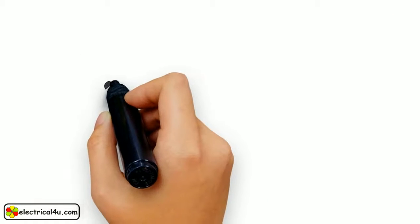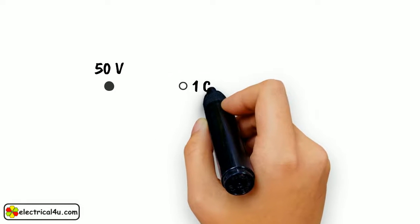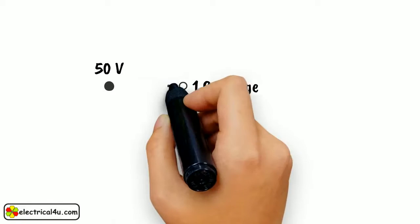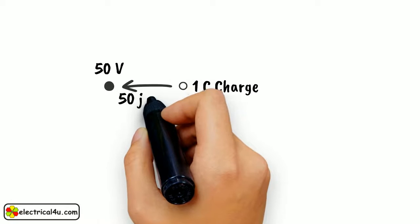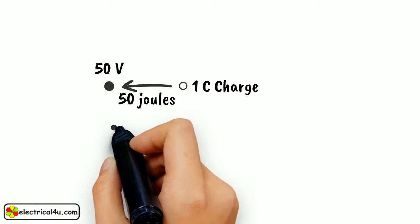If we say that a point has a potential of 50 volts, it means that 50 joules of work has been done in moving one coulomb of charge to that point. In other words, we can say that every coulomb of charge at that point has an energy of 50 joules.